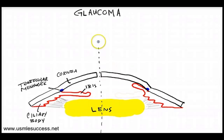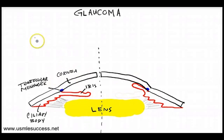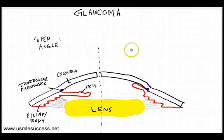We split the eye down the middle to identify the look of two different types of glaucoma. On the left side here, what we're looking at is the look of open angle glaucoma, and on the right here, we're looking at closed angle glaucoma.